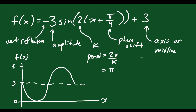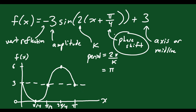The period is π, so when you get to the end of the cycle that's at π, the middle is at π/2, and the lowest point is at π/4. The maximum point is going to be halfway between π/2 and π, so at 3π/4. But we also have the phase shift, and the phase shift is usually what I'll do last — I'll get everything in place first, and then shift the graph left or right. In this case we're moving π/4 to the left.